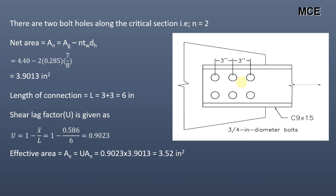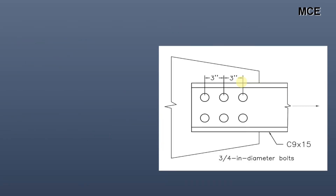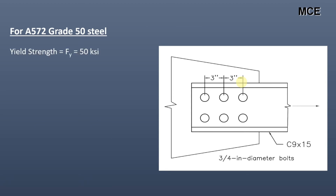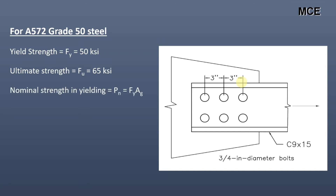The effective area equals 0.9023 multiplied by 3.9013, which equals 3.52 in². The properties of A572 Grade 50 steel are: yield strength Fy equals 50 ksi and ultimate tensile strength Fu equals 65 ksi.